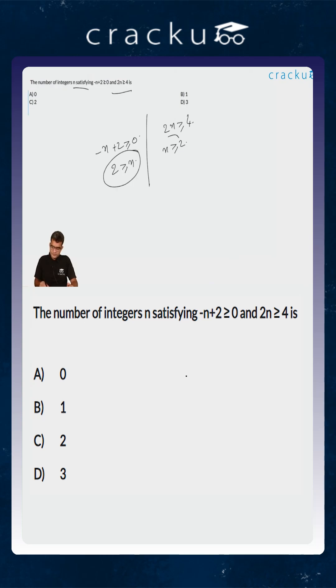You want both of them to be true. On the first hand, you know that n is less than or equal to 2, and on the second hand, you know that n is greater than or equal to 2.